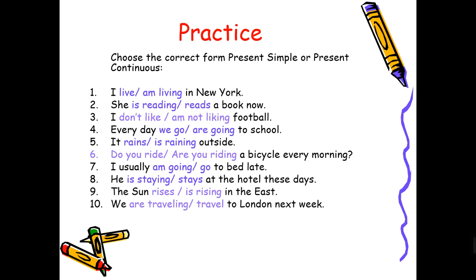Number 6: 'Do you ride / are you riding a bicycle every morning?' — the keyword 'every morning' signals present simple: 'Do you ride a bicycle?' Number 7: 'I usually go / am going to the beach late' — the keyword 'usually' signals present simple: 'I usually go.' Number 8: 'He is staying / stays at the hotel these days' — something happening only these days signals present continuous: 'He is staying.' Number 9: 'The sun rises / is rising in the east' — this is a scientific fact, so present simple: 'The sun rises in the east.' Number 10: 'We are traveling / travel to London next week' — a future plan for the near future signals present continuous: 'We are traveling to London next week.'